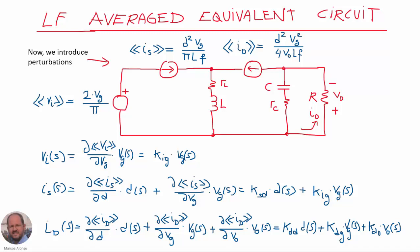Now we can go ahead and do the dynamic analysis of our PFC stage. For this we need to introduce perturbations in the different variables. All variables — the duty cycle, the peak line voltage, the output voltage — can be considered as time-varying variables. So we are going to consider perturbations in the peak line voltage, in the duty cycle, and in the output voltage.